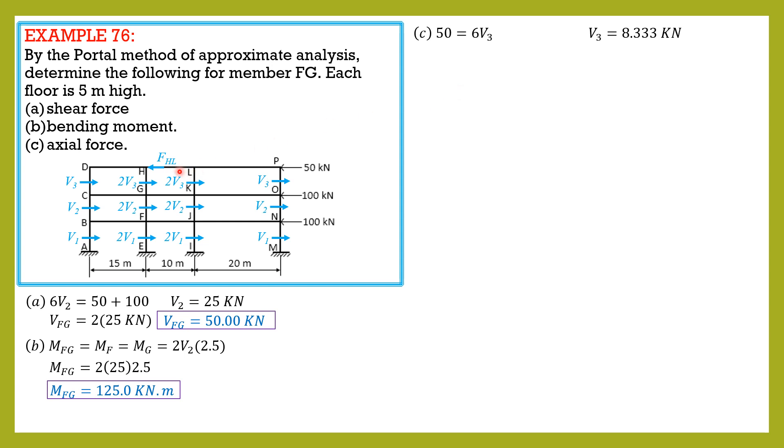Then from there we can solve for FHL. So considering this FBD, FHL equals v3 plus 2v3, so 3 times v3 equals FHL. So FHL is equal to 25 kilonewtons.